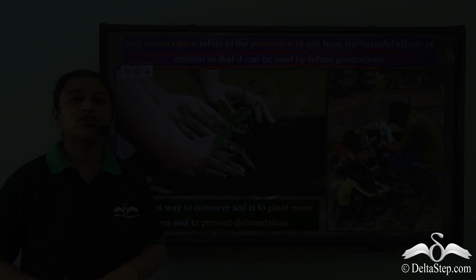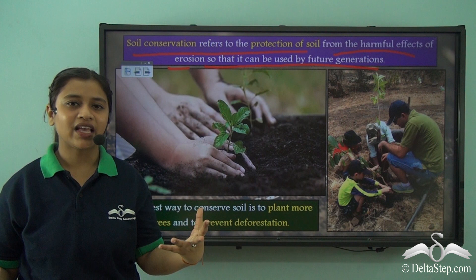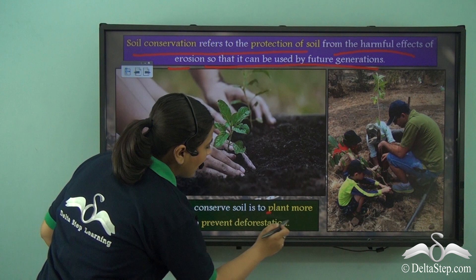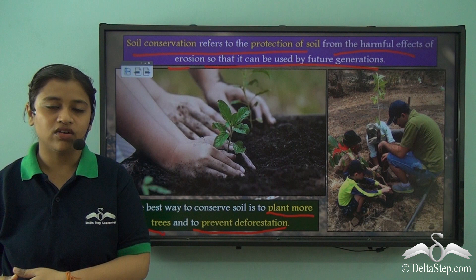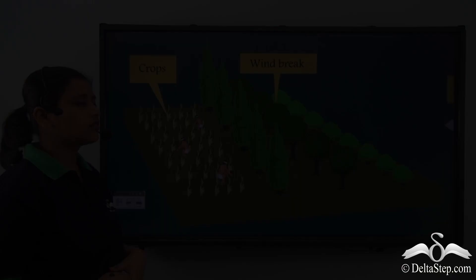The easiest and most convenient method to conserve the soil is to plant more trees — at our own gardens, nearby roads, or wherever it is possible. Planting trees is the best way to conserve soil, and preventing deforestation can also help us a lot. We should avoid cutting trees and plant more trees to make up for the losses caused by humans over the years.